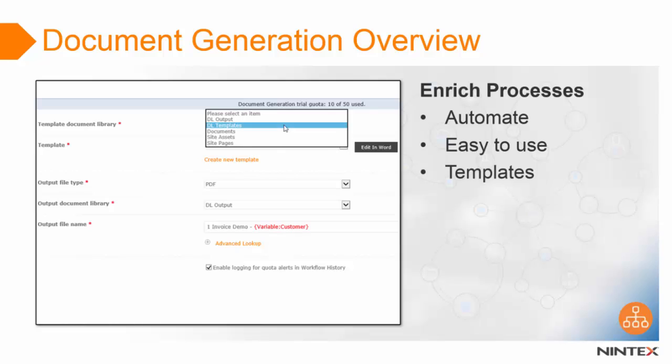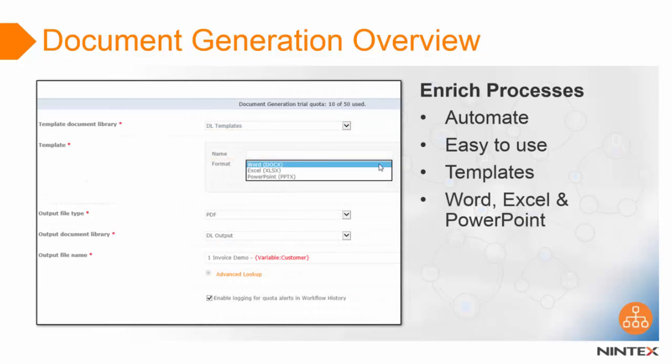With the document generation action you can easily create documents from your SharePoint lists and libraries using document templates. Select from existing templates you've created or create new ones in Microsoft Word, Excel, and PowerPoint. The action also provides a very useful feature with the output file type option, which will automatically convert the document to a PDF when the PDF option is selected from the drop down menu.